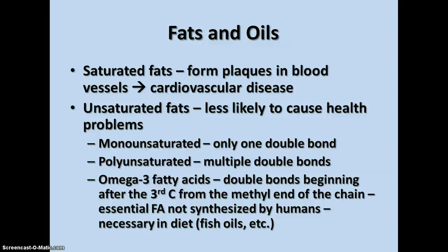Saturated fats, dietarily speaking, are more harmful for your body. They have a tendency to form plaques in your blood vessels, which can lead to cardiovascular disease. Unsaturated fats, on the other hand, are less likely to cause health problems. Monounsaturated fats have only one double bond and are often considered the healthiest kinds of fats. Polyunsaturated fats have multiple double bonds — two, three, or more — in the hydrocarbon chain. One specific kind of fatty acid that's really beneficial are called omega-3 fatty acids.